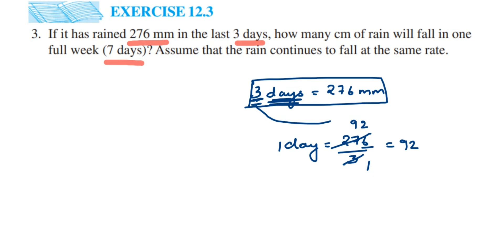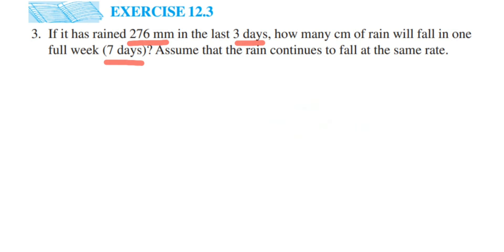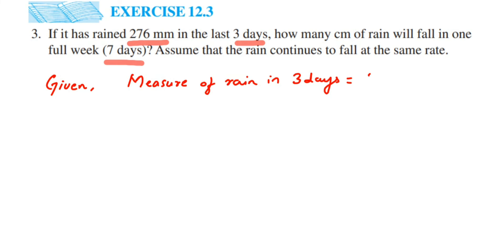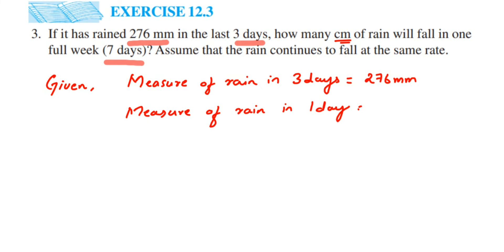Let's rewrite the solution clearly. Measure of rain in three days is equal to 276 millimeters. We will convert to centimeters at the end. Measure of rain in one day equals 276 millimeters divided by 3. Cancelling, we get 92 millimeters of rain in one day.